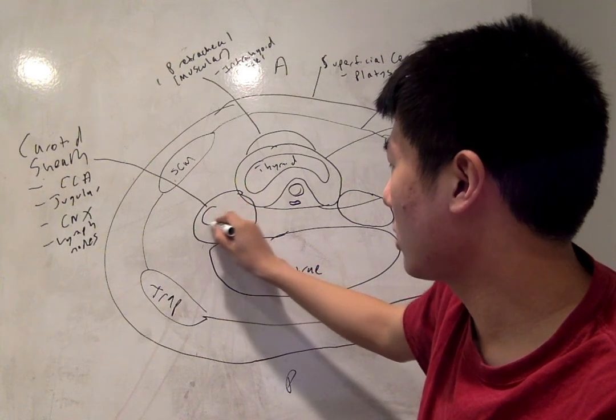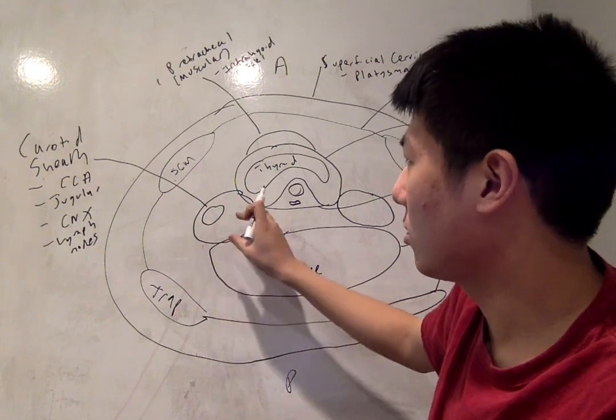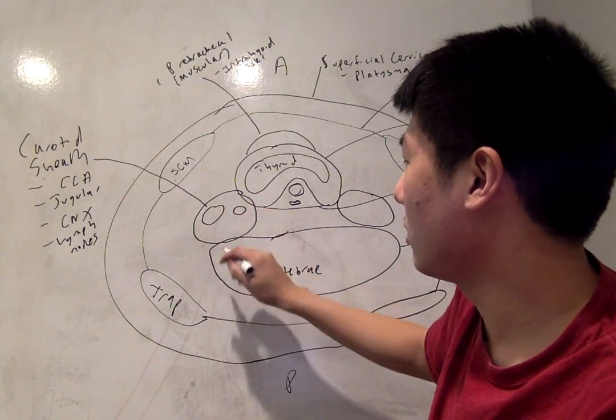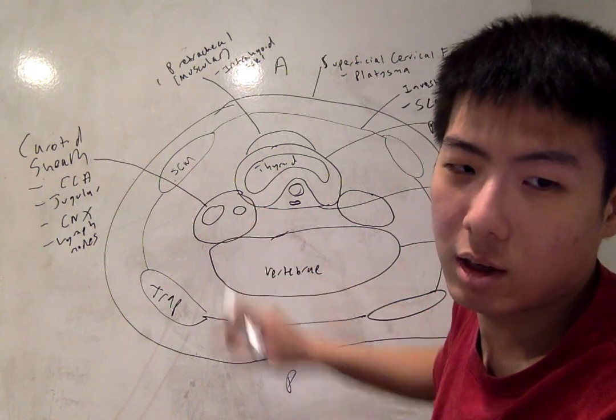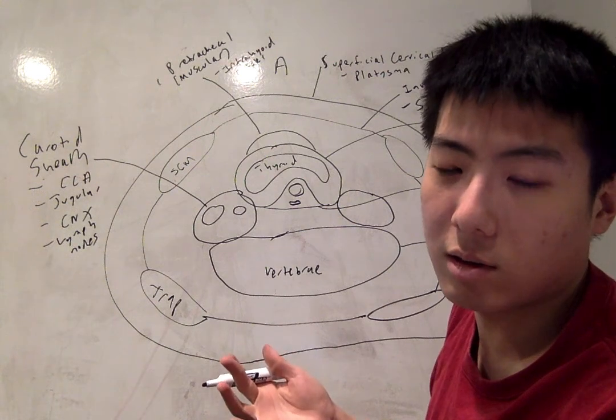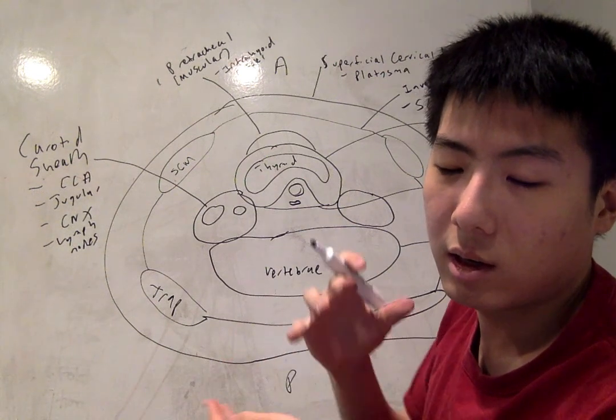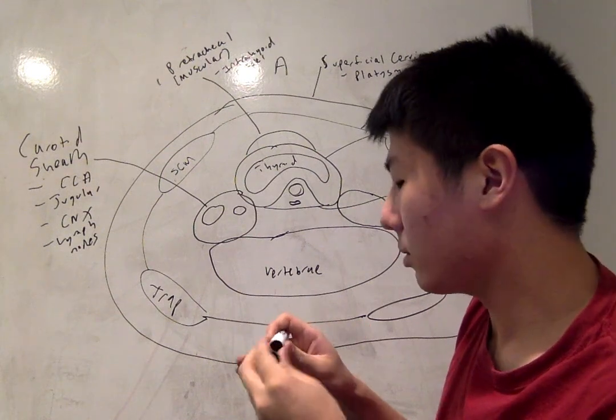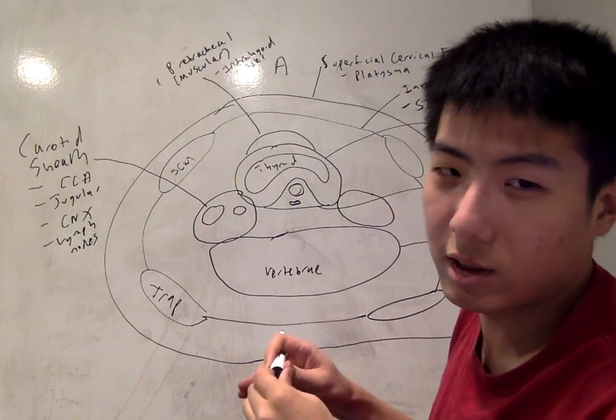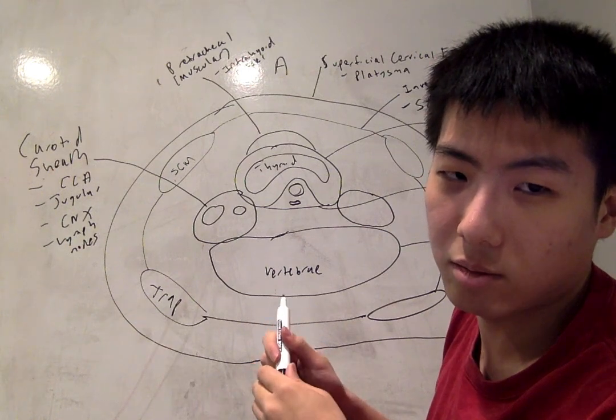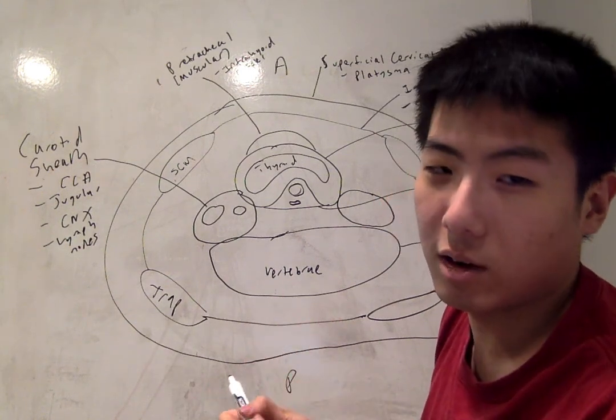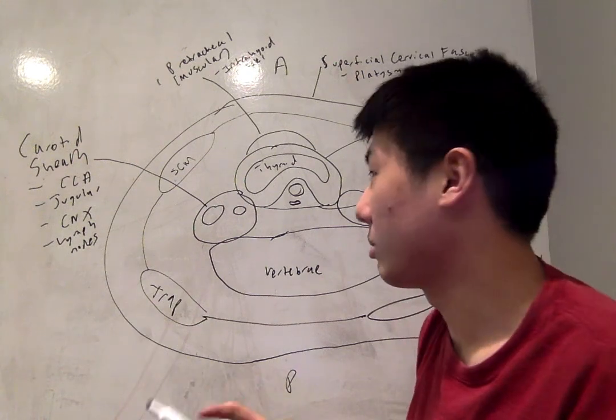The most lateral structure in the anterior portion of the carotid sheath is going to be the jugular vein. And then more medial to it is going to be the common carotid, which makes sense because in general, arteries are more interior than veins when talking about the body. Arteries need to be further away from the superficial layers of the skin because a rupture of an artery is a lot worse than the rupture of a vein.